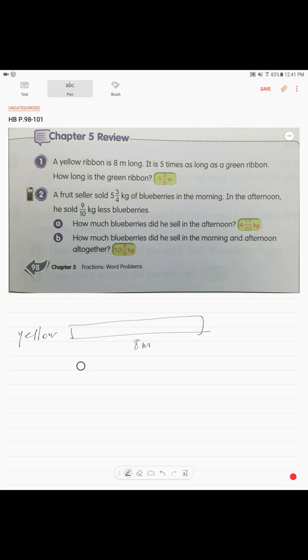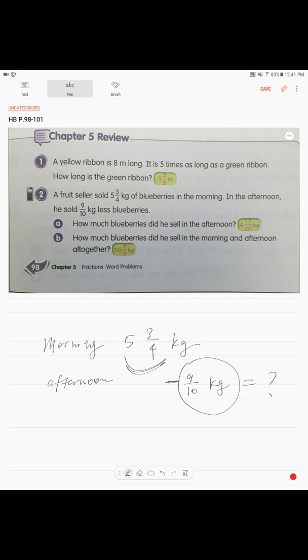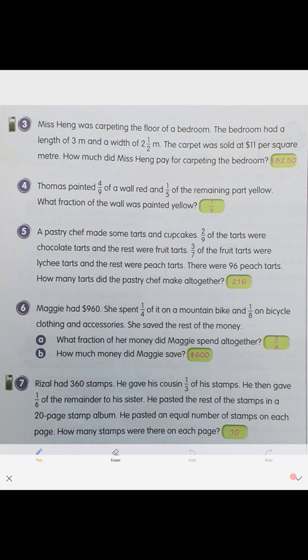Second problem: A fruit seller in the morning sold 5 3/4 kilograms of blueberries. In the afternoon he sold less. How do we find less? Minus 9/10 kilogram, and you find your answer. After you find your answer, they ask you how much altogether. So you take this number and this number and you got your answer.